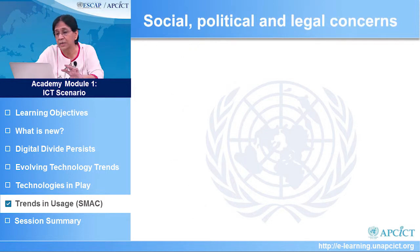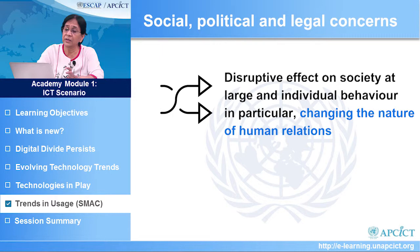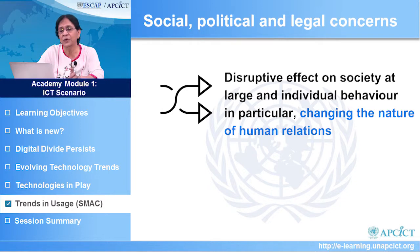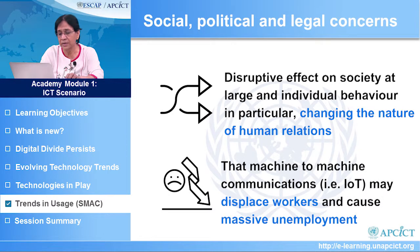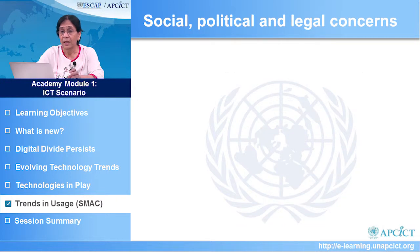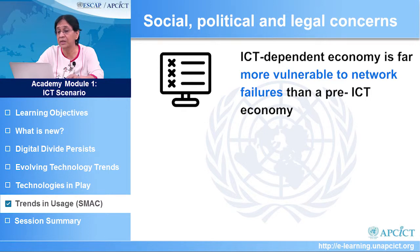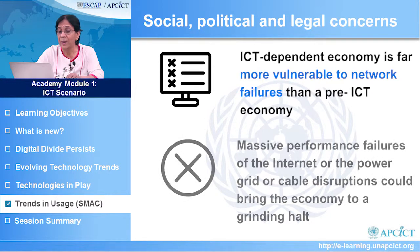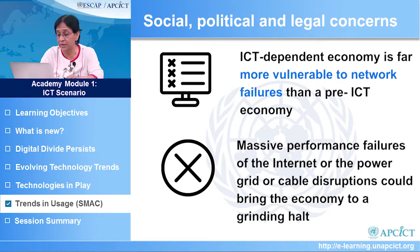The current technology scenario has given rise to several social, political and legal concerns. First is the disruptive effect that technology has had on society at large and individual behavior in particular, changing the nature of human relationships. There is also a concern that machine-to-machine communication — such as in the Internet of Things, where automated tasks take over — may cause massive unemployment in the IT sector, displacing workers. A third consideration is that an ICT-dependent economy is far more vulnerable to network failures than a pre-ICT economy, and massive performance failures over the internet, power grid or cable disruptions could bring an economy or society to a grinding halt.